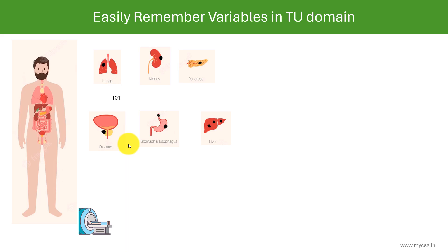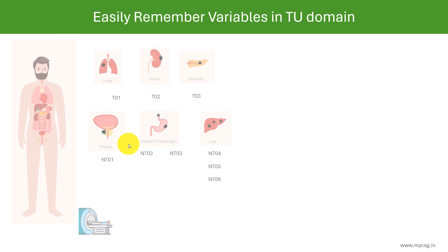The target lesion in the lung is identified as T01, the one in kidney as T02, and the one in pancreas as T03. The non-target lesions are identified as NT01 for the prostate gland tumor, NT02 and NT03 for those in stomach and esophagus, and NT04, NT05, and NT06 for the three lesions in the liver. So there are 9 total tumors present in the body — 3 target and 6 non-target.